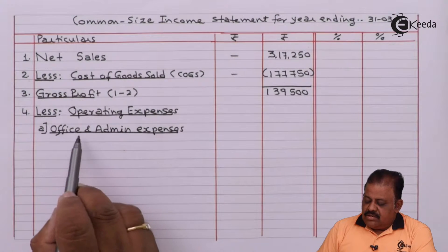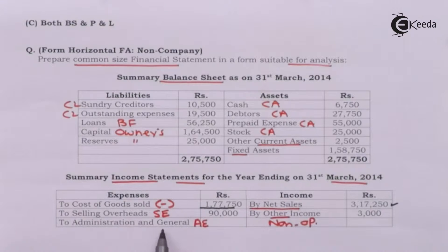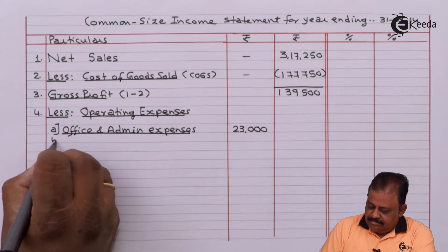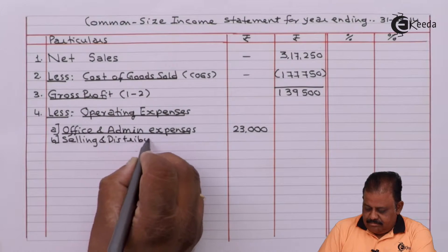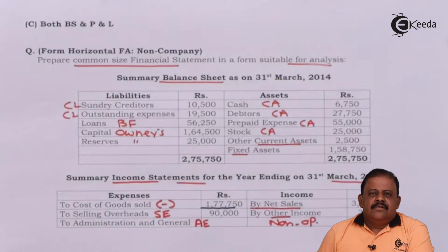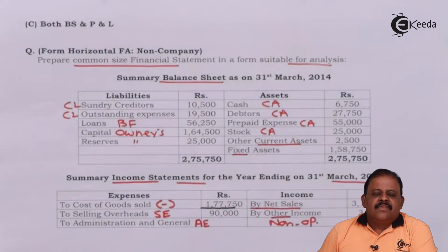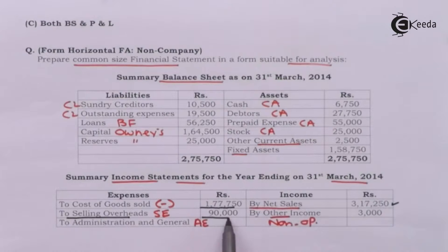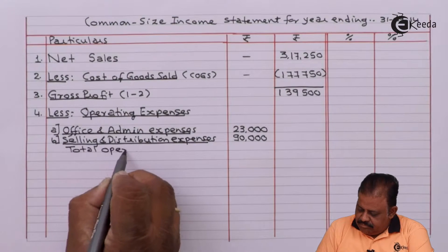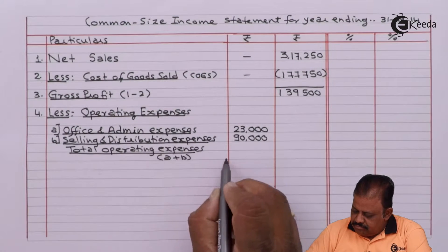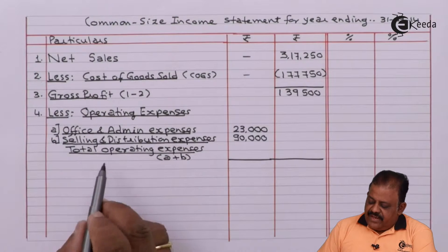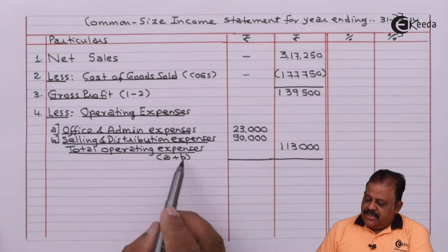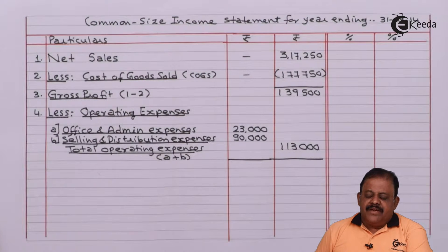First we consider office and administration expenses, which is 23,000. Next we have selling and distribution expenses, which is 90,000. We can find out total operating expenses by adding these two values. Total operating expenses come to 1,13,000, which will be deducted from gross profit.